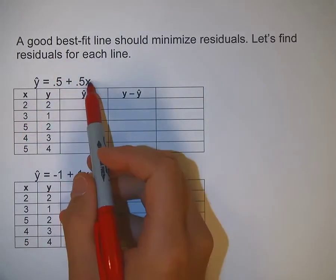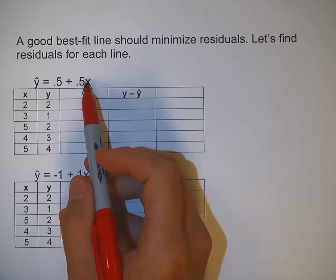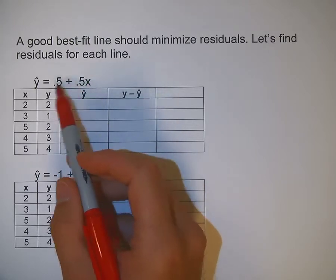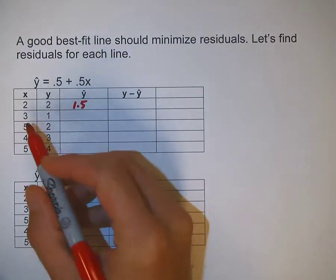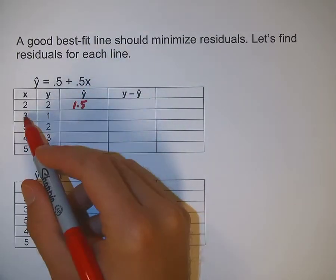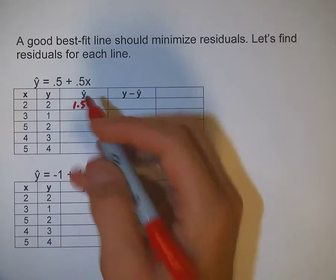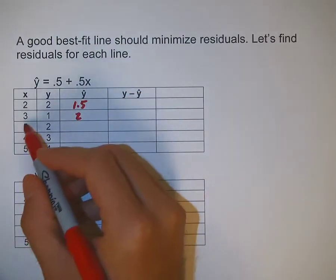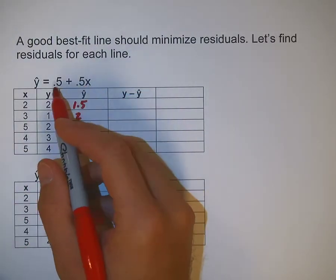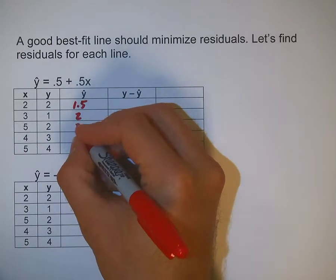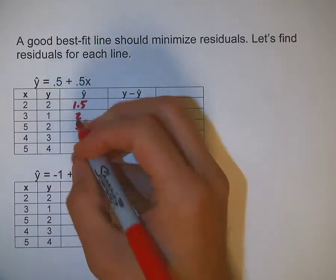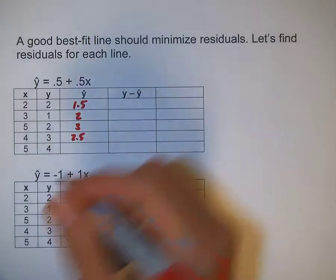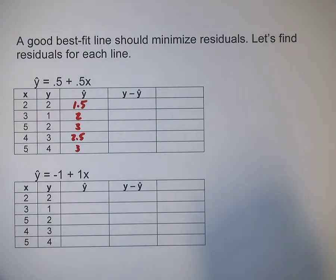If I take 2 and substitute it in for x: 0.5 times 2 is 1, plus 0.5 is 1.5. For 3: 0.5 times 3 is 1.5, plus 0.5 is 2. For 5: 5 times 0.5 is 2.5, plus 0.5 is 3. For 4: 2 plus 0.5 is 2.5. And for 5, we already calculated this, so that's also 3.